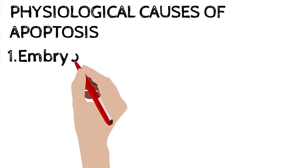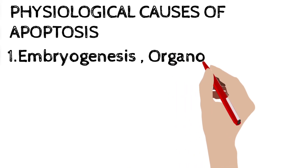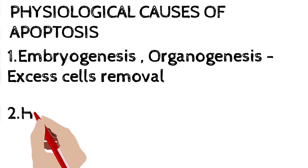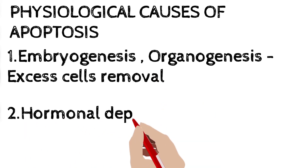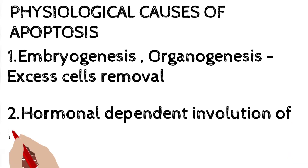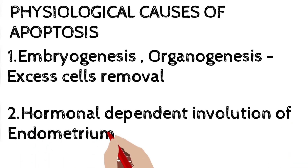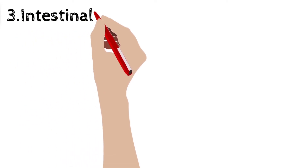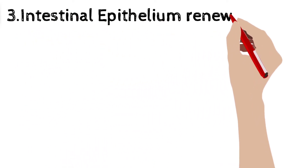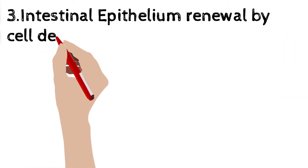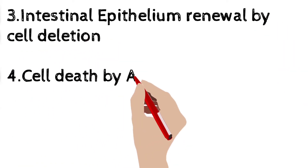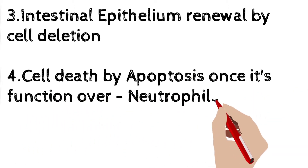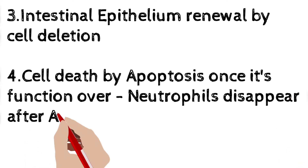The first example is embryogenesis or organogenesis — organ development during fetal development. During embryogenesis, excessive cells are removed by apoptosis. The second example is hormonal-dependent involution of the endometrium and prostate gland with advanced age. The third example is intestinal epithelium, which is constantly getting renewed in our body, so excessive cells are removed by cell deletion apoptosis.